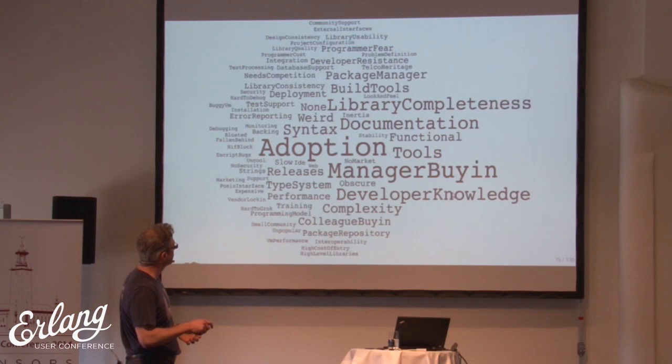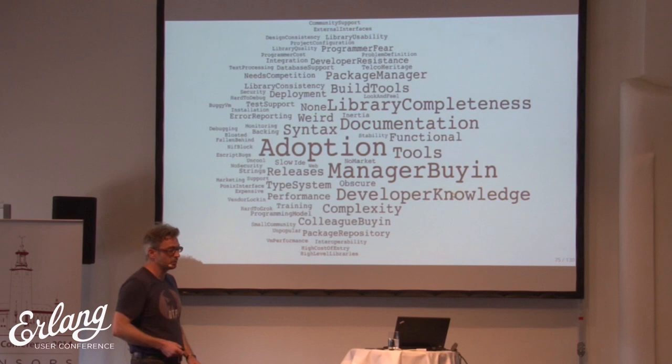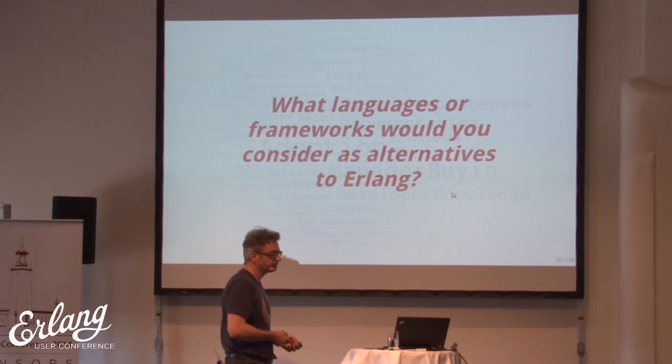Removing hard-to-learn, you can see developer knowledge, manager buy-in, and adoption pop out. Then there are ancillary tertiary results: documentation, library completeness, commonly cited package management, build tools, complexity, type systems. This gives a good reflection of the secondary and tertiary challenges people have.